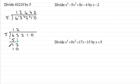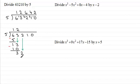We now subtract to work out what the remainder would be. 13 take away 10 is 3, just as we had before. We carried that 3 across to the 2 to make 32, so we just bring down the 2, and we now have 32, and we start all over again. You might like to pause the video at this point and carry on with this question. When you come back you can check your solution against mine.